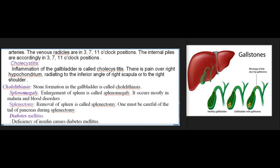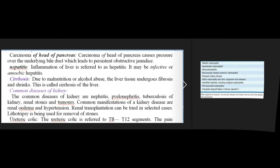Diabetes mellitus: deficiency of insulin causes diabetes mellitus. Carcinoma of the head of the pancreas: causes pressure over the underlying bile duct, leading to persistent obstructive jaundice. Hepatitis: inflammation of the liver; may be infective or amoebic. Cirrhosis: due to malnutrition or alcohol abuse, the liver tissue undergoes fibrosis and shrinks. Common diseases of the kidney: nephritis, pyelonephritis, tuberculosis of kidney, renal stones, and tumors; common manifestations are renal oedema and hypertension. Renal transplantation can be tried in selected cases; lithotripsy is used for removal of stones. Ureteric colic: referred to T11-T12 segments; pain radiates from loin to groin.